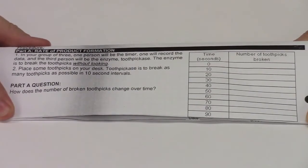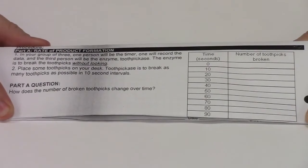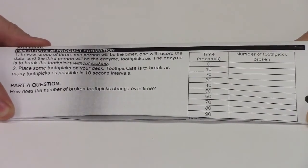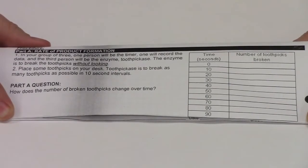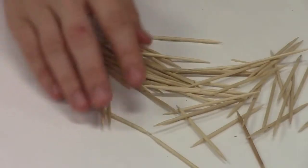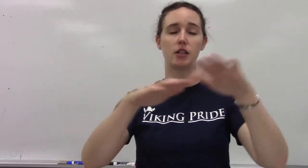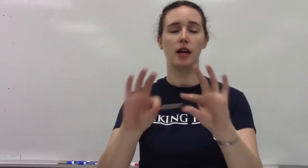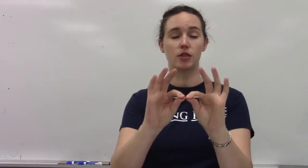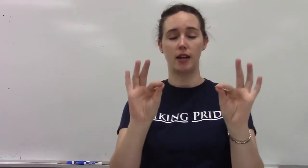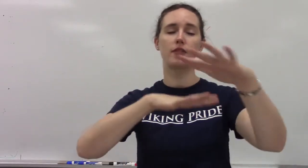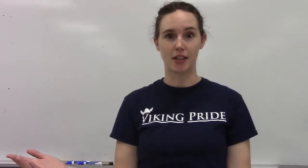In Part A, students will be getting a baseline for how quickly their toothpick ace enzyme can do its job. The toothpick ace will fish around blindly until it can find one toothpick, put it in its active site and then break it, and then continue to try and find others in the allotted time.